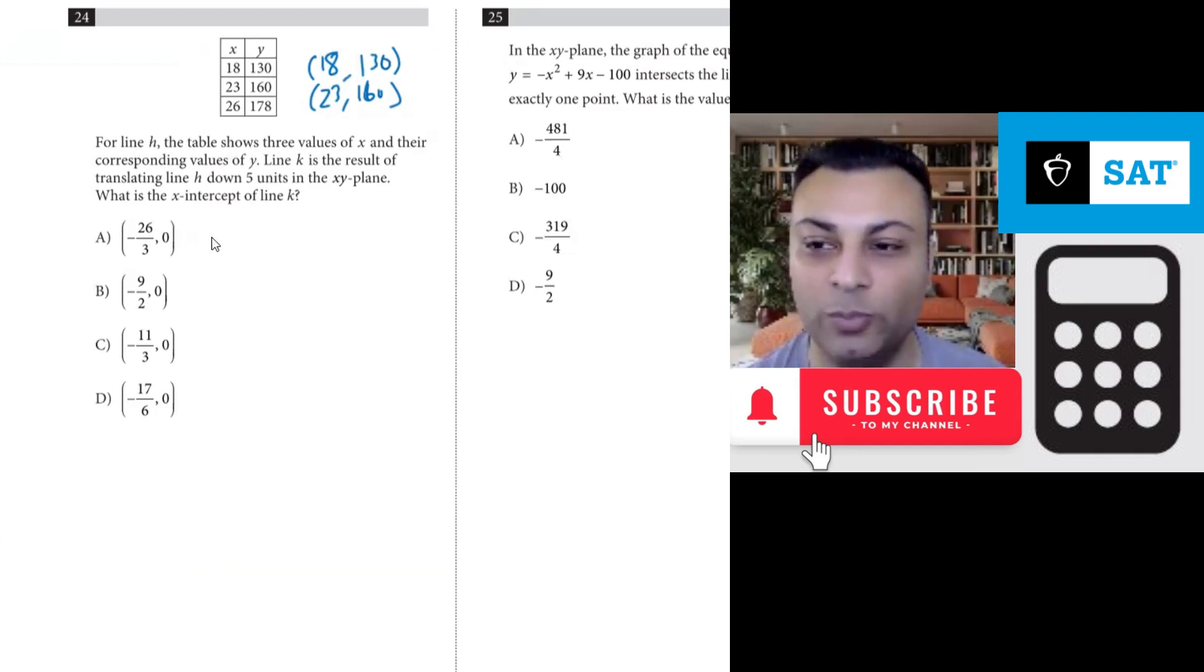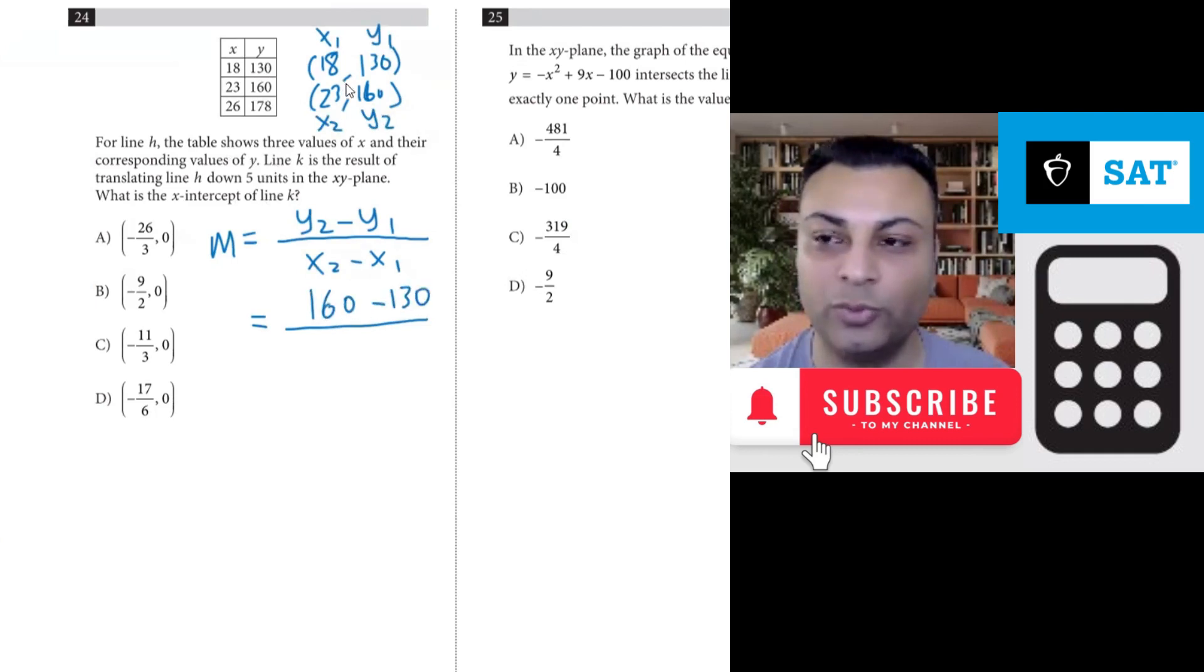So I would like to get the slope of line H. If you recall the formula, it's Y2 minus Y1 over X2 minus X1. So let's go ahead and put those in. This is X1 and Y1 and this is X2 and Y2. So we're going to do 160 minus 130 over 23 minus 18.